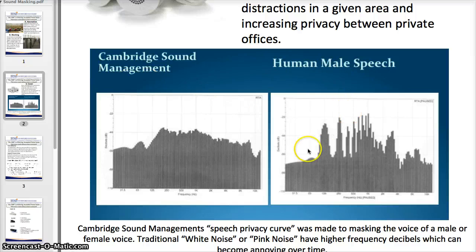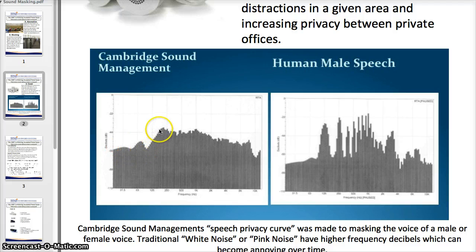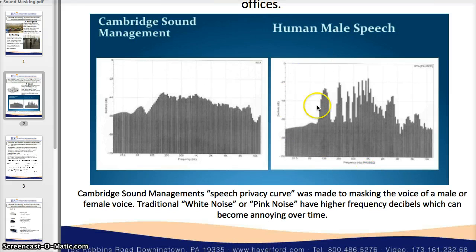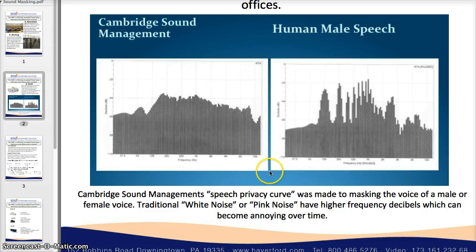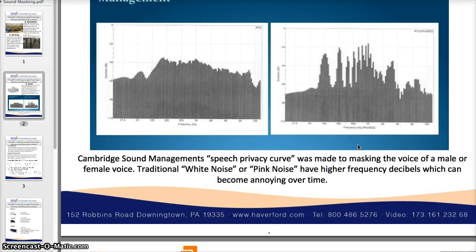Here we have the sound of a male voice captured in a decibel level and frequency chart. You can see that Cambridge Sound Management's sound masking emits a sound that goes on top of the human male speech. The speech privacy curve was made for masking this voice. When they overlap, you may hear someone talking next to you, but it's too difficult to clearly understand what they're saying. That's the basics of what covering the sound does.